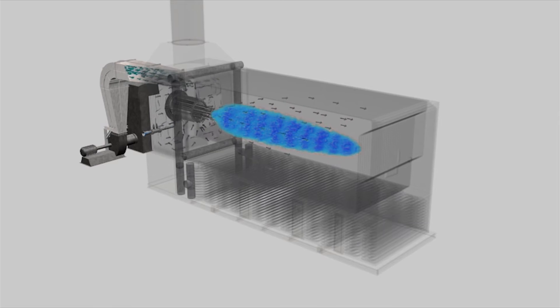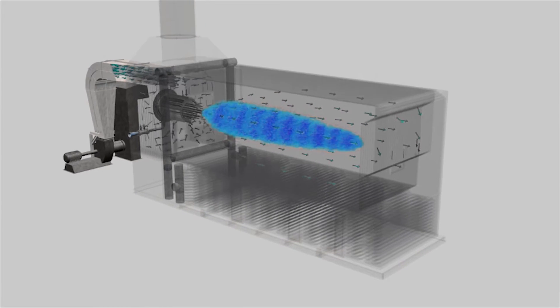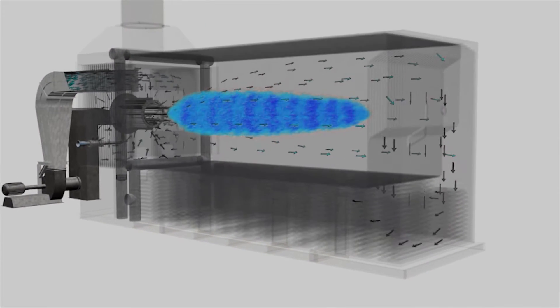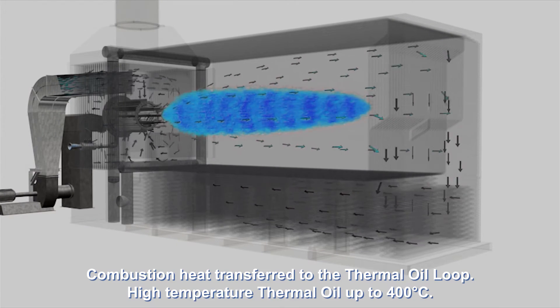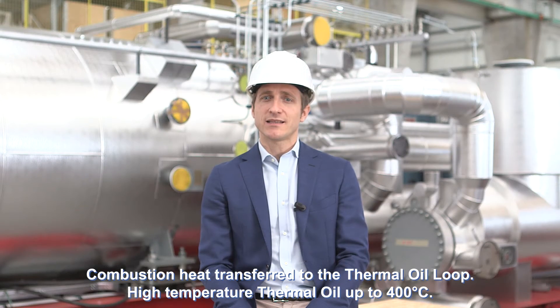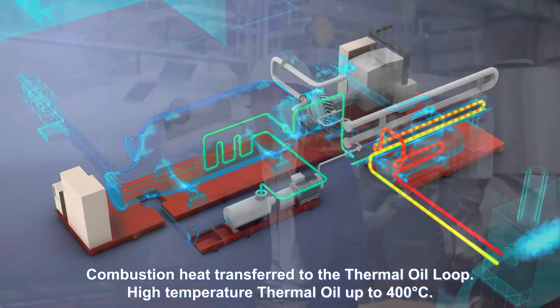The combustion heat is transferred to the thermal oil loop, firstly in a radiant section and secondly in a convective section. The specific thermal oil selected can be operated at temperatures up to 400 degrees C.